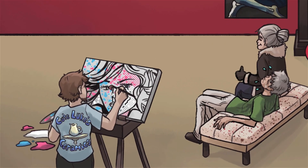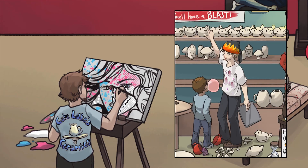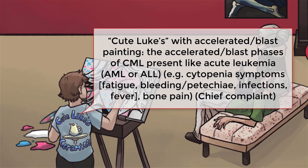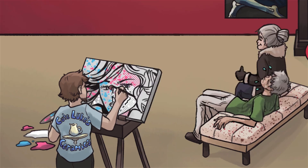Patients in the accelerated and blast phases of CML begin to present with symptoms more similar to acute leukemia. Symptoms of acute leukemia are primarily a result of cytopenias: fatigue from anemia, bleeding and petechiae from thrombocytopenia, as well as infections and fever from neutropenia. Patients may also have bone pain as leukemic cells expand into the bone and periosteum.